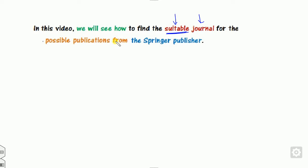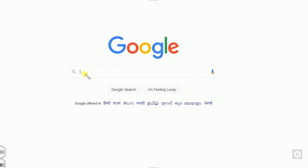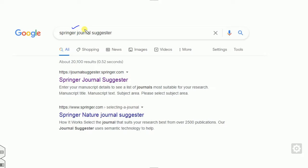When any researcher wants to publish their research paper, especially in the Springer publisher, they always try to look for a good journal which provides a good decision in a reasonable time. For example, if the person wants a suitable journal in terms of SCIE, SCIE expanded, social science, Scopus, or emerging SCIE, they can select journals from the Springer platform. To do that, just go to Google and type "Springer journal suggestor" and you can see two links will appear.